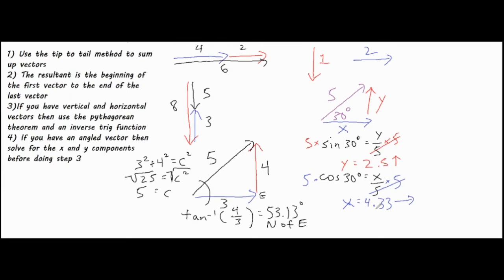We have 4.33 to the right, and since both horizontal components are acting in the same direction, we add those together. For our vertical vectors, we have 2.5 upwards and then one down — going in exact opposite directions — so we take 2.5 minus 1, which takes us upwards 1.5. Our final resultant vector, after adding all three together, is shown here, and we'll use the same methods: Pythagorean theorem and an inverse trig function to find that angle.